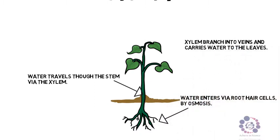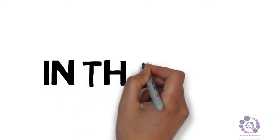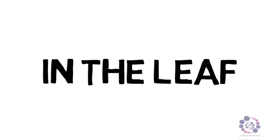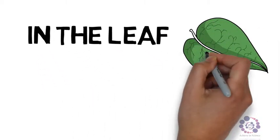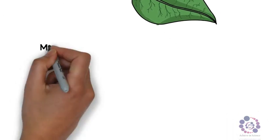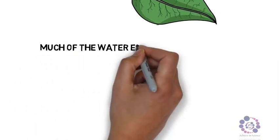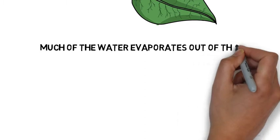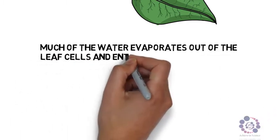Let's have now a closer look at what happens in the leaf. In the leaf, much of the water evaporates out of the leaf cells and enters the leaf air spaces as water vapor.